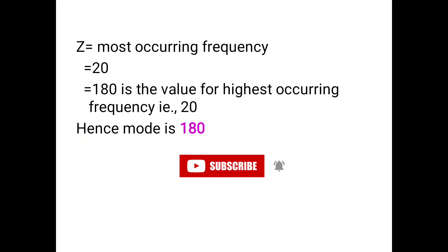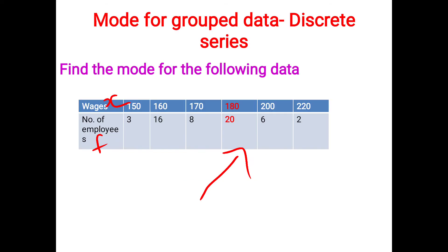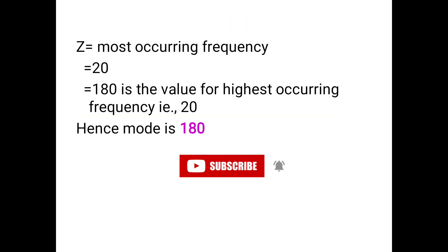Z is the most occurring frequency, which is 20. The corresponding X value is 180. Since 180 has the highest frequency of 20, the mode Z is equal to 180.